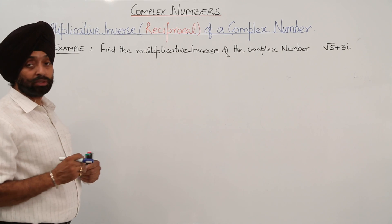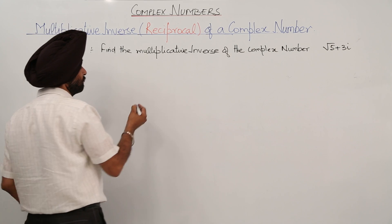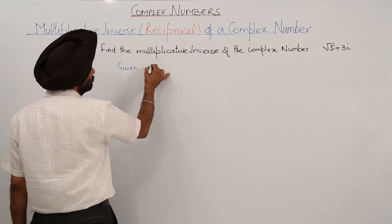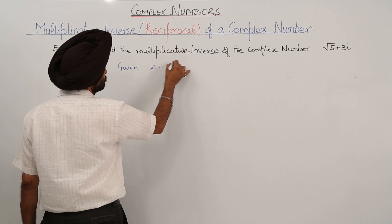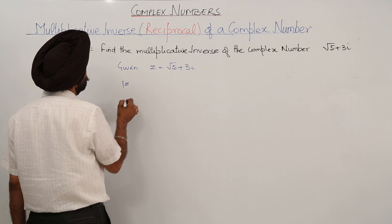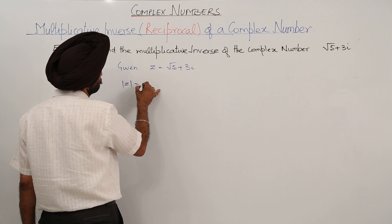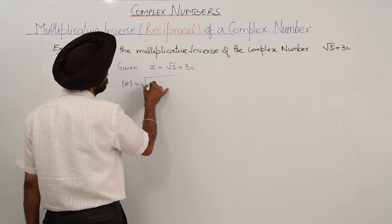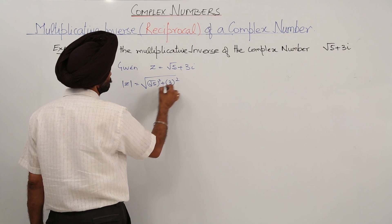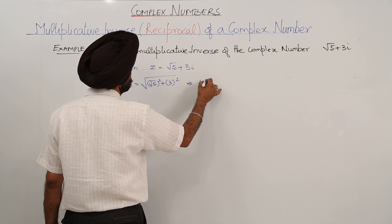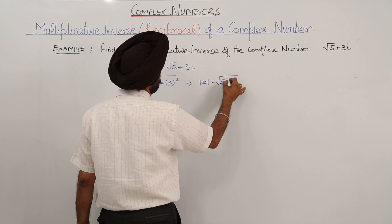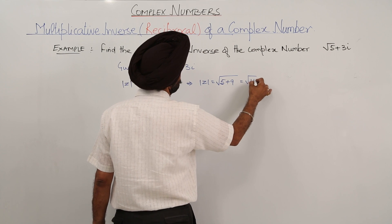To find the multiplicative inverse for √5 + 3i. Given Z is equal to √5 + 3i. The modulus of Z becomes √(5² + 3²), which becomes 5 plus 9, equal to √14.